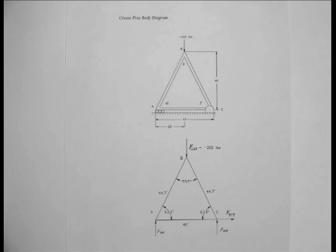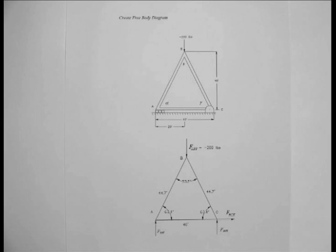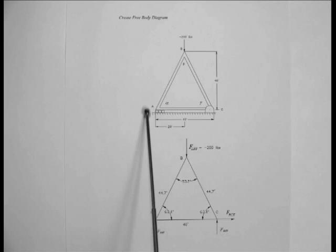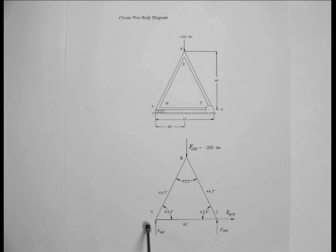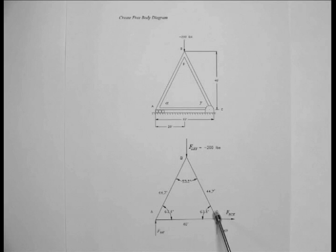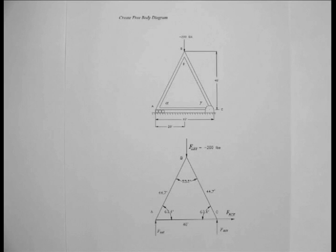The next step, step two, is to create the free body diagram. This is done by taking all of the dimensions of the truss, retaining all of the lengths of the different sides, noting that we have applied a load of 200 pounds in the down direction. At point A, the rollers constrain the movement of the truss in the vertical direction but not in the horizontal direction. Similarly, the pin at point C constrains the movement of the truss in both the x and the y dimensions. In this way, we have converted our truss diagram into a free body diagram. Note that there are multiple unknowns in this diagram.